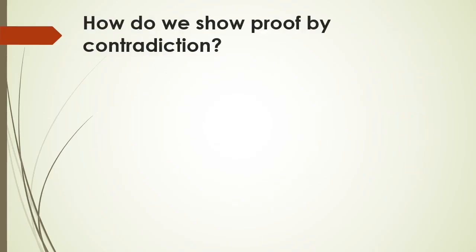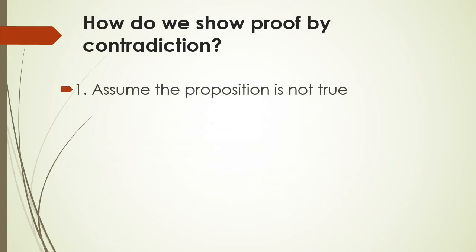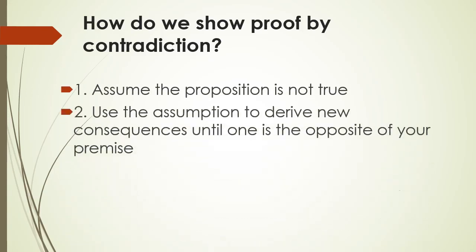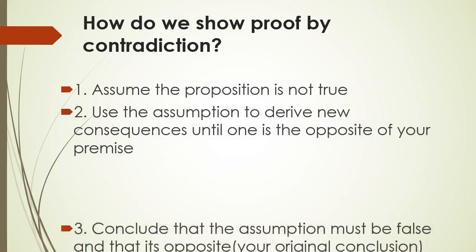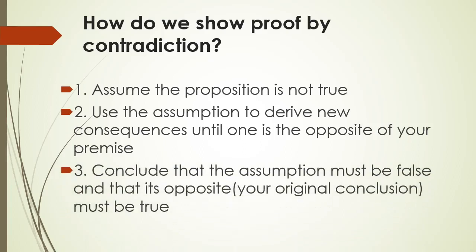How do we show proof by contradiction? There are three steps. First, assume the proposition is not true. Second, use the assumption to derive new consequences until one is the opposite of your premise. And third, conclude that the assumption must be false and that its opposite — your original conclusion — must be true.